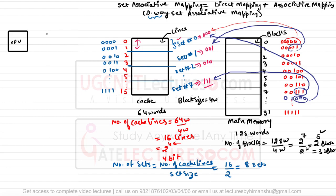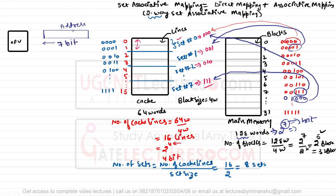When the CPU generates a memory request, it generates a word address. The number of bits required to represent word addresses in main memory depends on the main memory size. Since main memory is 128 words, we require 7 bits to represent the addresses. This 7-bit address is divided into three parts: the offset part, which depends on block size. Since block size is 4 words, written as 2 raised to power 2, the offset requires 2 bits.